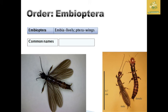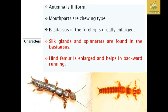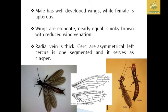The next order is Embioptera. 'Embi' means lively and 'ptera' means wings. Common names include embiids and web spinners. They have filiform antennae, chewing mouthparts, and the basitarsus of the foreleg is greatly enlarged, containing silk glands and spinnerets. The hind femur is enlarged and helps in backward running. Males have well-developed wings; females are wingless. Male wings are elongated, nearly equal, smoky brown with reduced venation, and radial veins are very thick. The cerci are asymmetrical — one larger and one smaller — and one-segmented, serving as claspers.